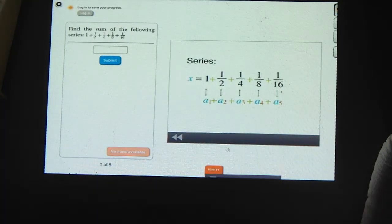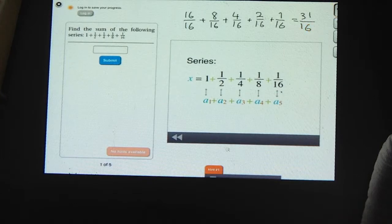Let's evaluate the sum. The common denominator is 16, so we can write it as 16 over 16. That's 1. Plus 8 over 16. That's a half. A fourth is 4 sixteenths. And then we have an eighth and a sixteenth. The numerator is added to 31, and the denominator is 16.